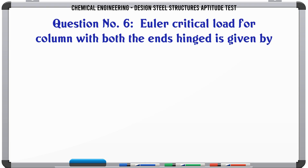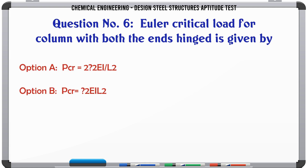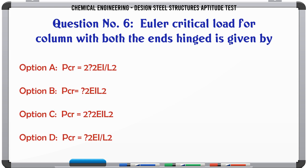Euler critical load for column with both the ends hinged is given by: A. PCR = π²EI/L². B. PCR = 2π²EI/L². C. PCR = 2π²EI/L². D. PCR = 2πEI/L².